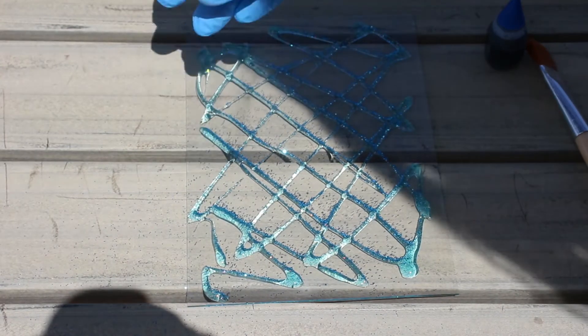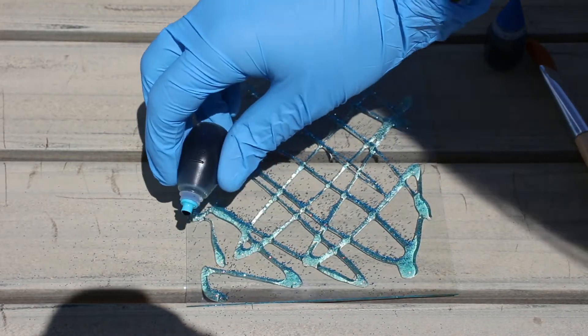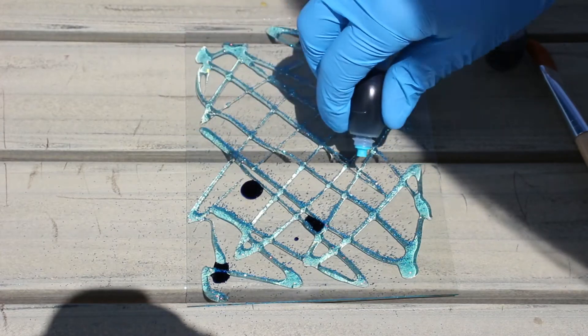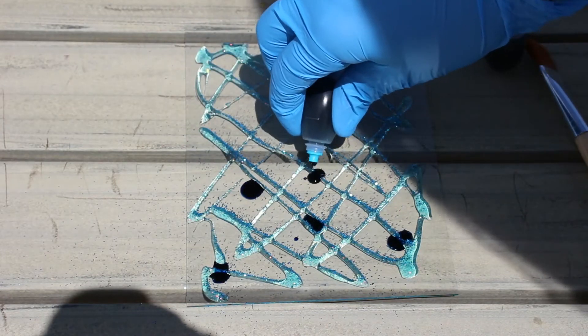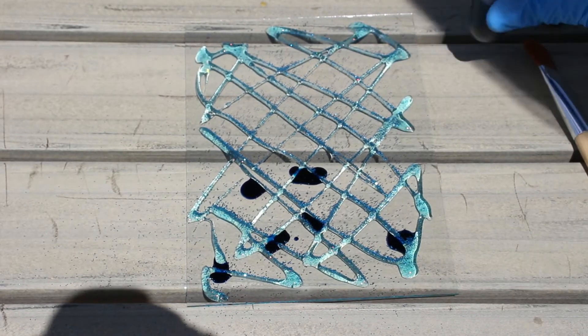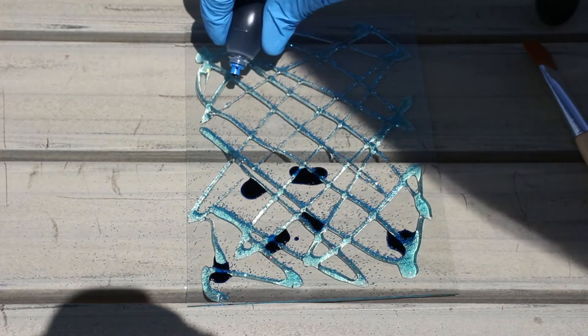So here I'm just going to drip the food coloring. And then up here I'm just going to drip the dark blue.